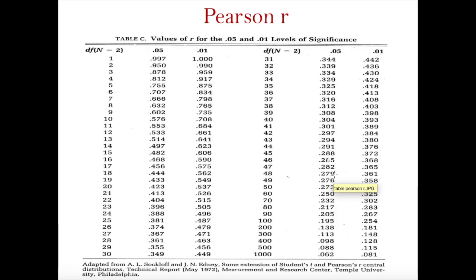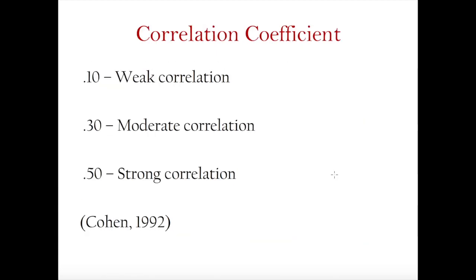Once you've determined whether your coefficients are significantly different from 0, you can describe them further. We don't have to use tables anymore because technology and software allow us to compute the exact p-value of our coefficients. If our coefficient has a p-value less than our alpha level, we conclude it is a statistically significant correlation coefficient. Our software already provides us with the p-values.